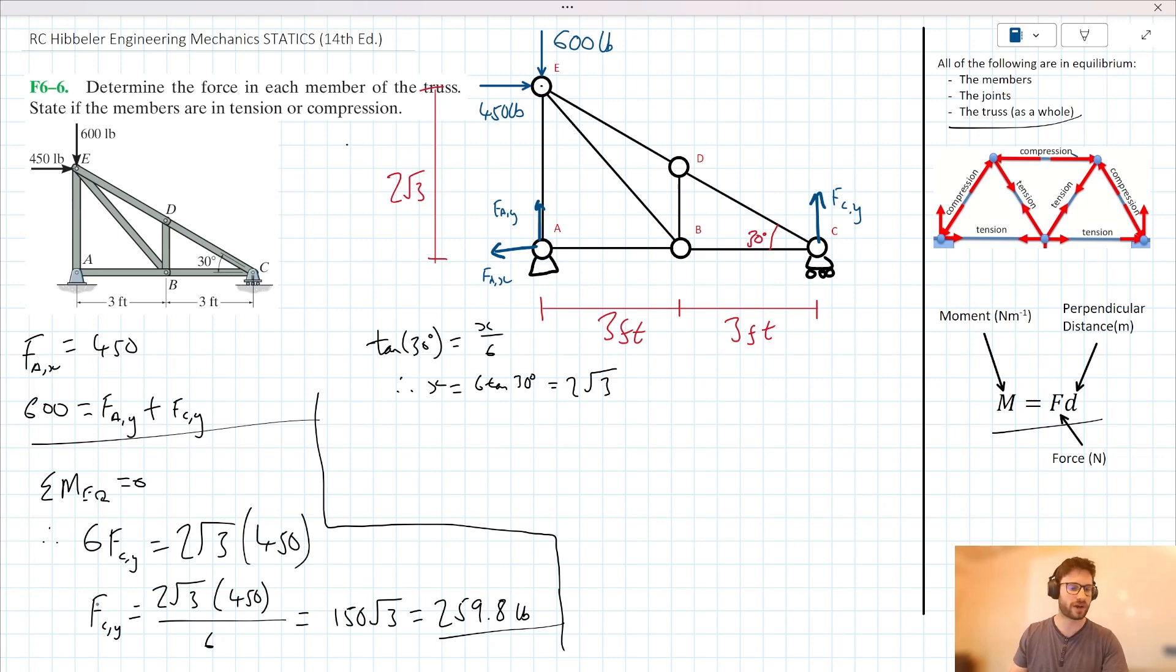Now, since we have F_CY, we noted earlier that 600 is equal to the sum of F_AY and F_CY. We can therefore say here that F_AY is equal to 340.2 pounds. Okay.